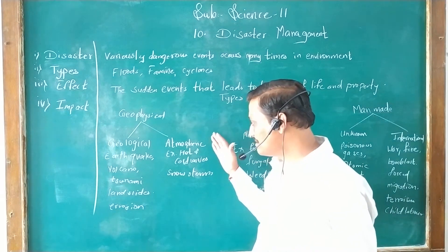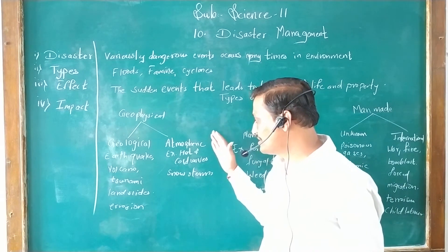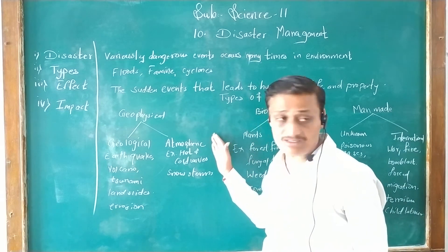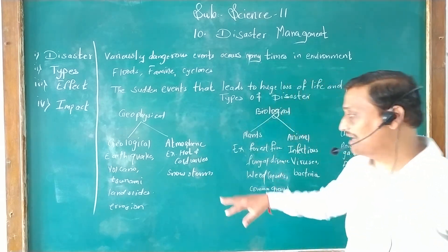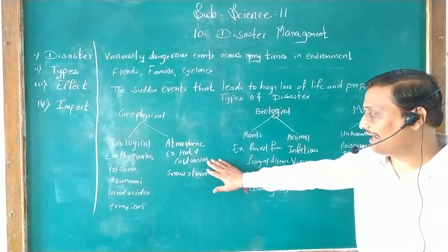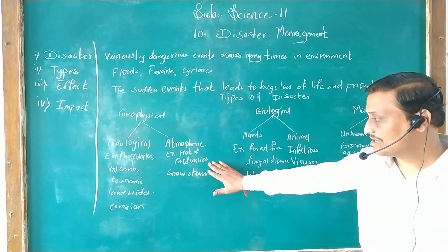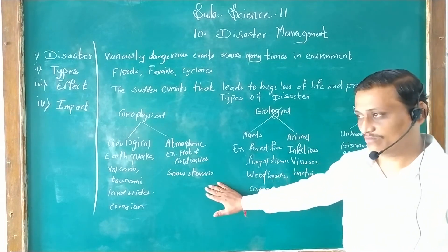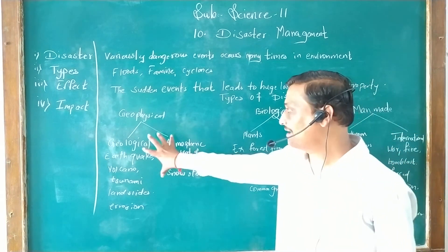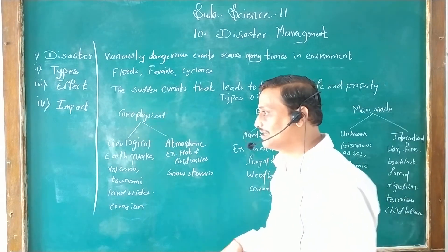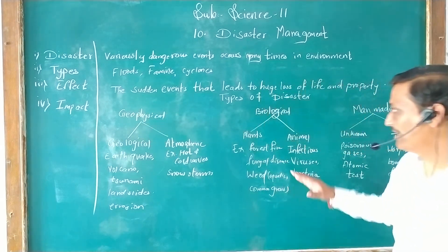The second sort of disaster classification is atmospheric disaster. Examples in it are hot and cold waves, snow storms. These all are categories of geophysical disasters.